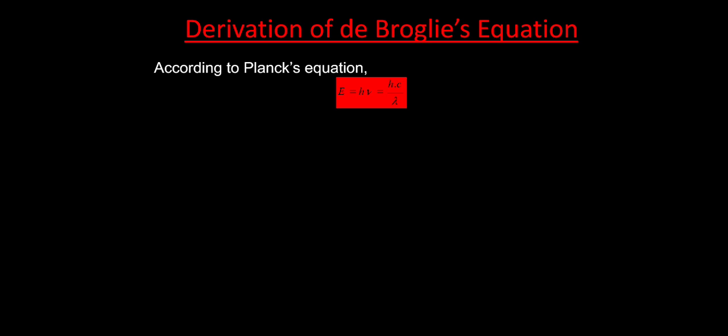From this, c by lambda comes from the fact that nu is equal to c by lambda. So the relationship between frequency and wavelength lambda is: nu equals c by lambda. Let us take this as equation 1.